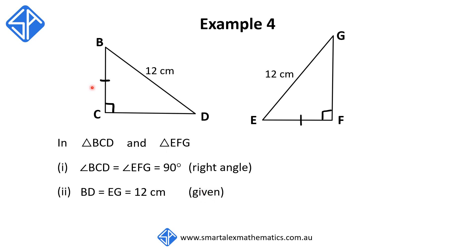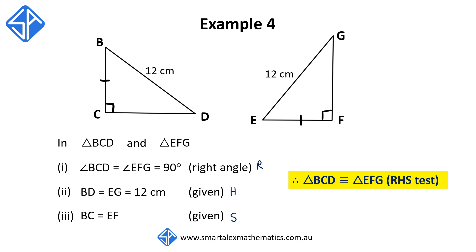We can also see from the diagram that BC and EF are marked to be equal. So our third reason is: BC is equal to EF — given. For this question, we have an R for the right angle, an H for the hypotenuse, and an S for the side. Therefore, triangle BCD is congruent to triangle EFG, using the RHS test.